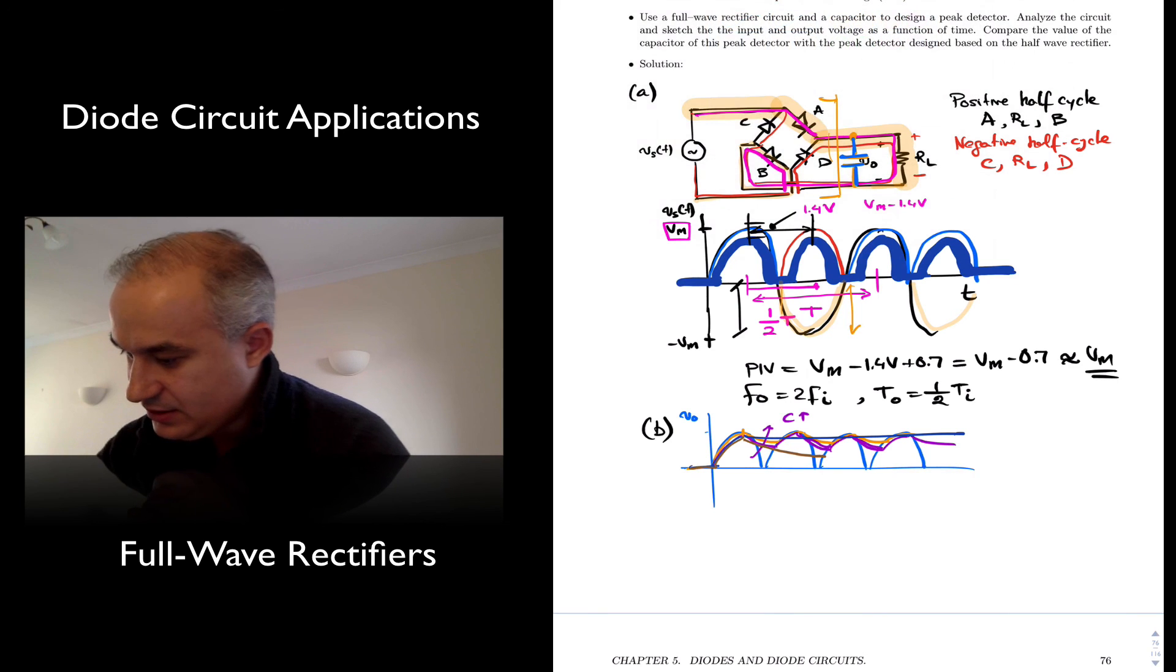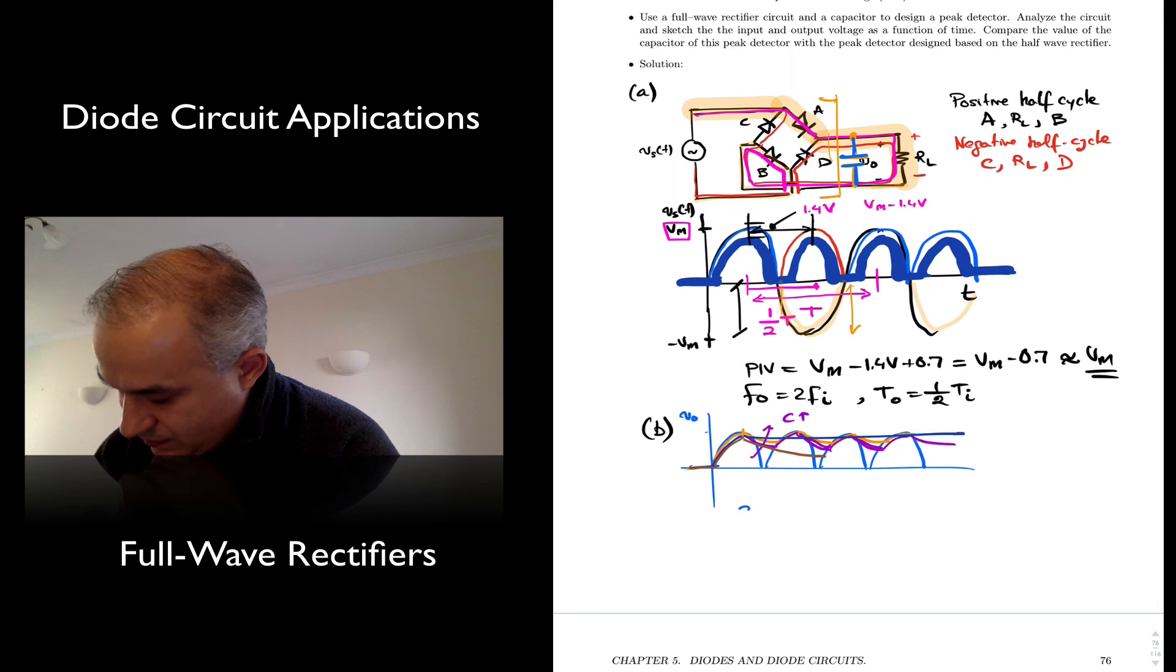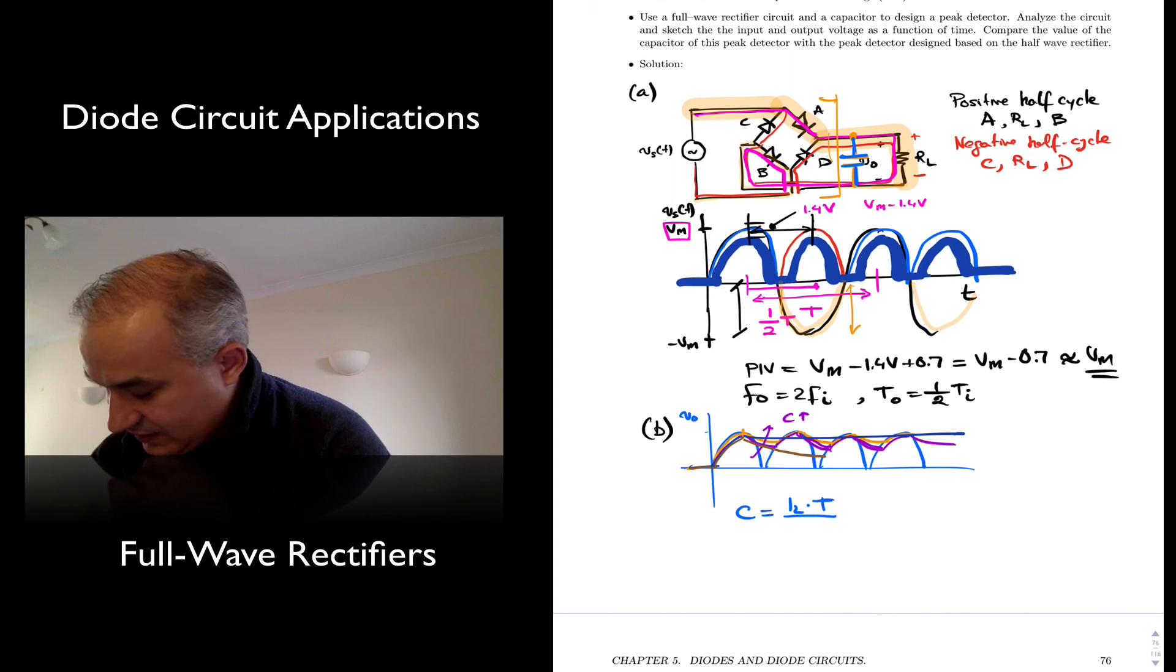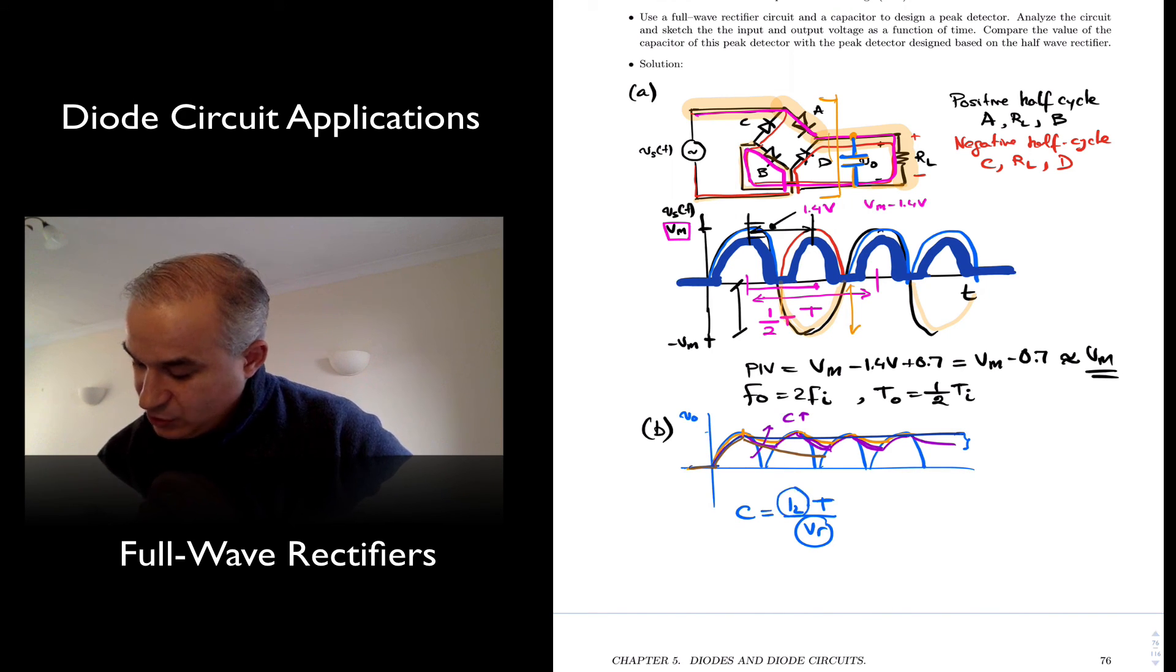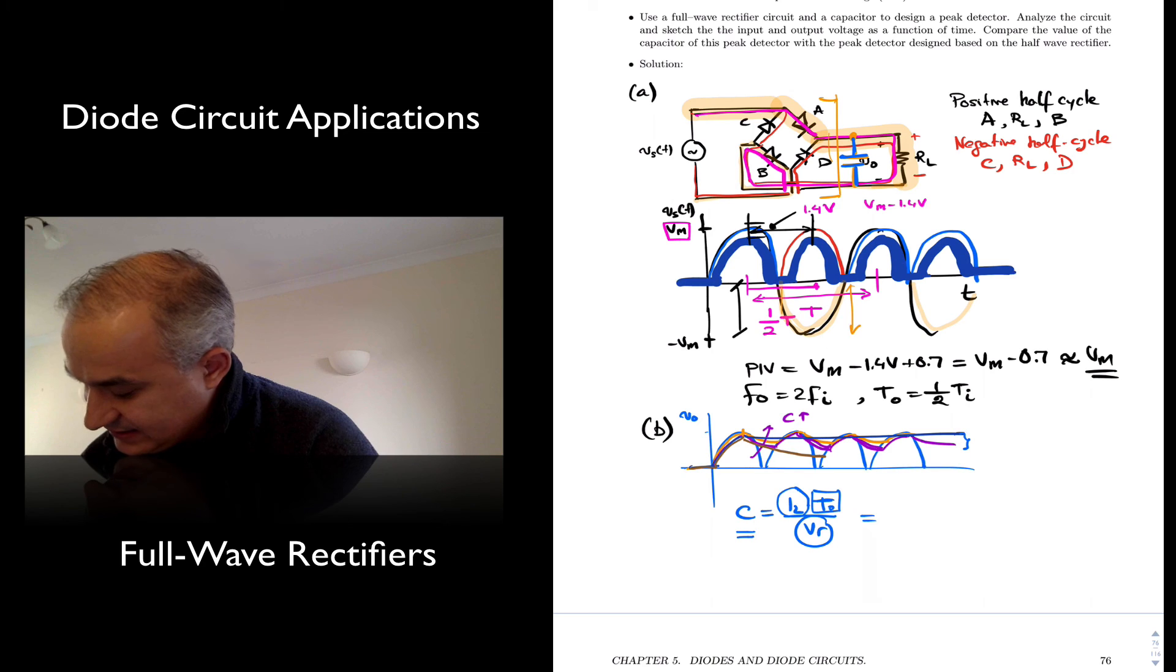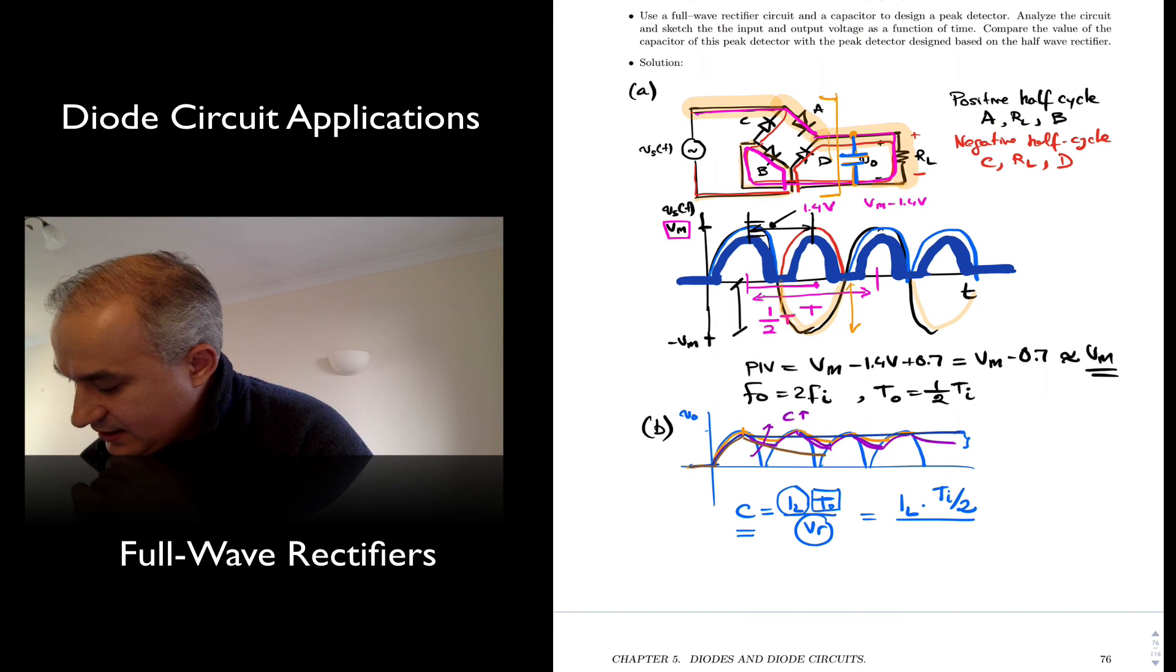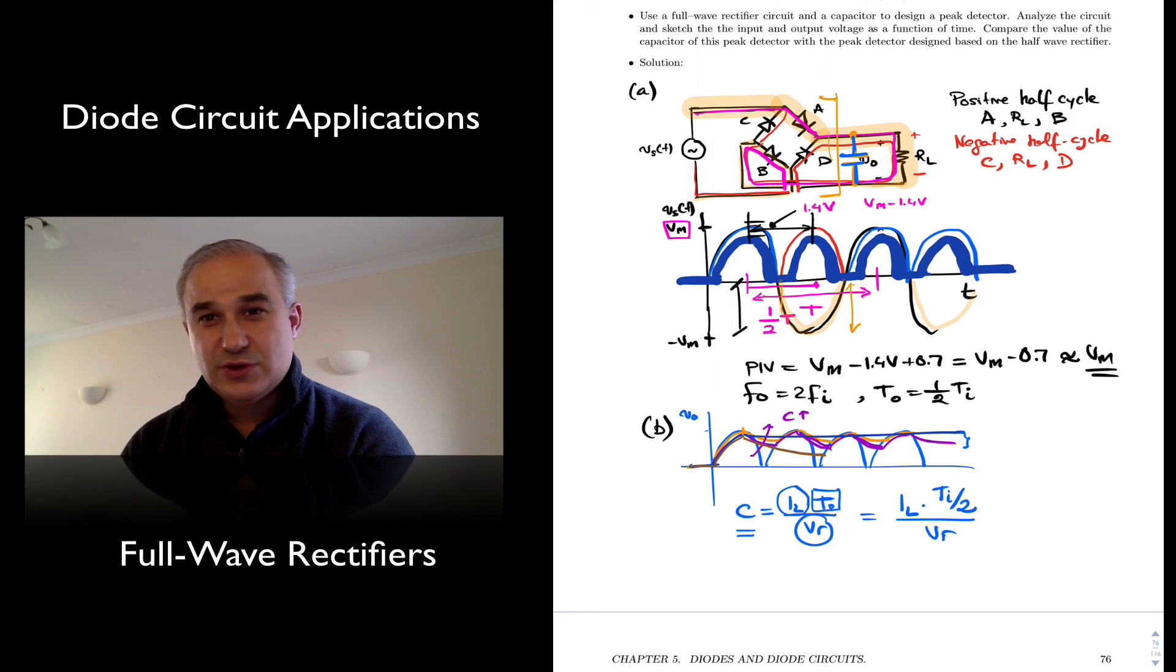And so you recall, in the previous activity, we had mentioned that the capacitor value was going to be determined by the load current times the time divided by the ripple voltage. So depending on the ripple, for a particular ripple, let's imagine that you want that the ripple is less than one volt or 0.5 volts, and you provide this much load current, you can select the capacitor. And now what we have is that the T, this is the T of the output, is what? One half T of the input. So we have that this is I load times T input over 2, divided by the ripple voltage.